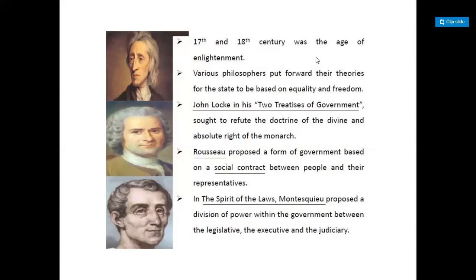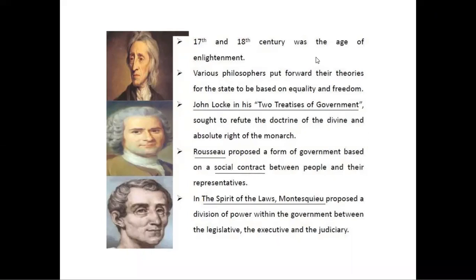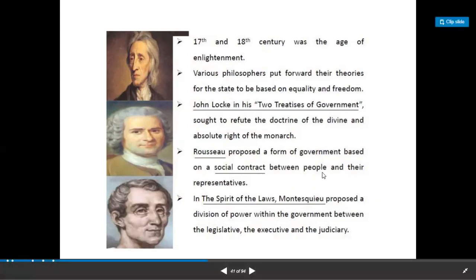Another philosopher, Rousseau, proposed a form of government which was based on his social contract between people and their representatives. Another philosopher, Montesquieu, wrote the book The Spirit of the Laws and proposed a division of power within the government — between the legislature, executive, and the judiciary.